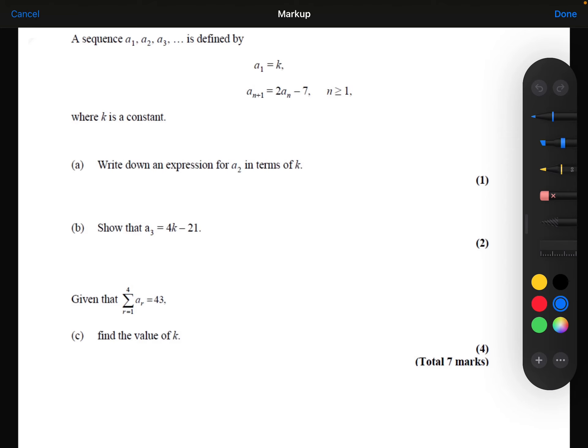We need to write down an expression for a₂ in terms of k. So using the rule here, to get a₂, I would do 2 times a₁ minus 7. And I know that a₁ is k, so I can replace a₁ with k. And so this is my expression for a₂ in terms of k: 2k minus 7.